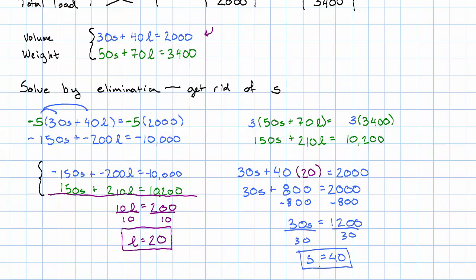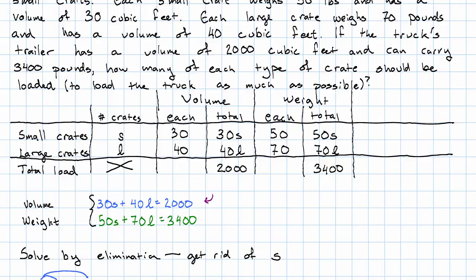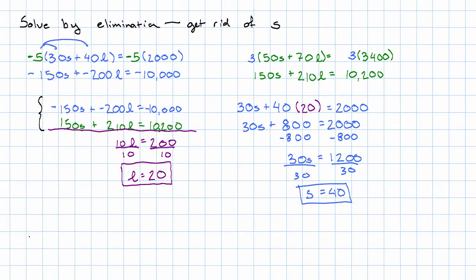L is 20, S is 40. L was the number of large crates, S was the number of small crates. And so our answer is 20 large and 40 small crates.